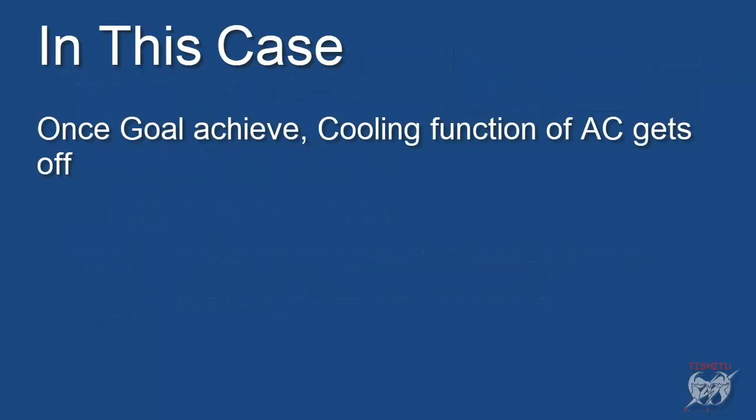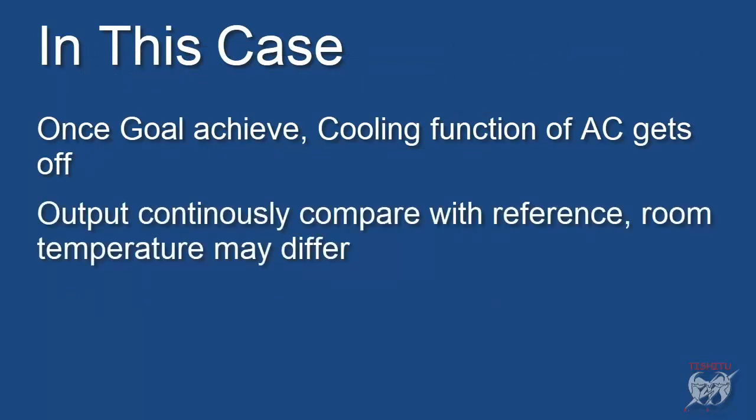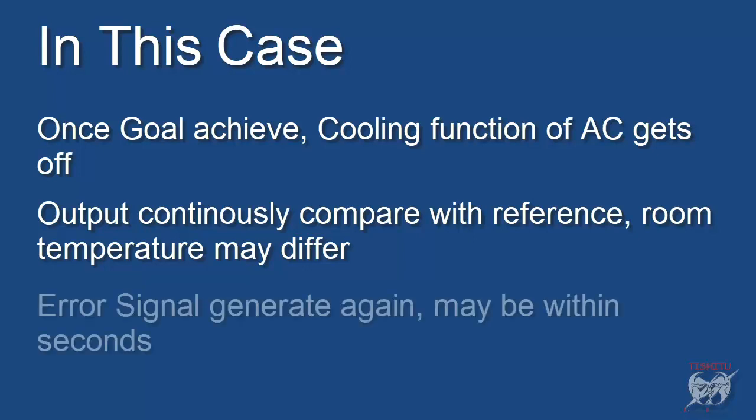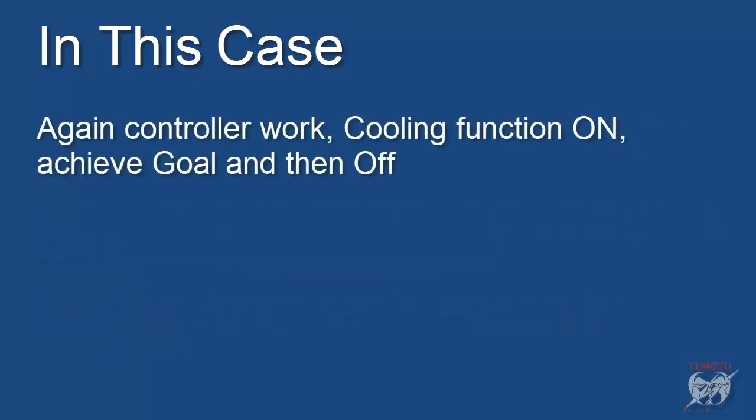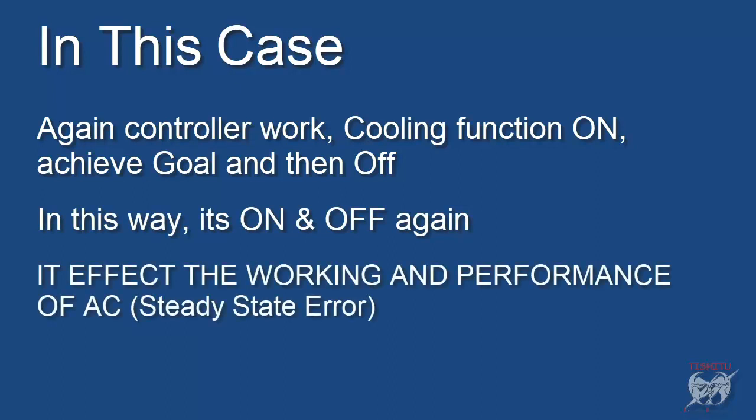But in this case once goal achieved and error signal gets 0, cooling function of AC gets off. But since output continuously compared with reference, so maybe again error generate within second and again controller work and achieve goal and so on. So in this way cooling function of AC gets off gets on gets off gets on. It can't stable at operating point. This known as a steady state error.